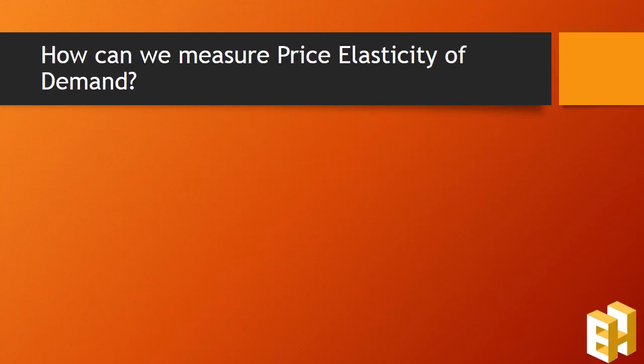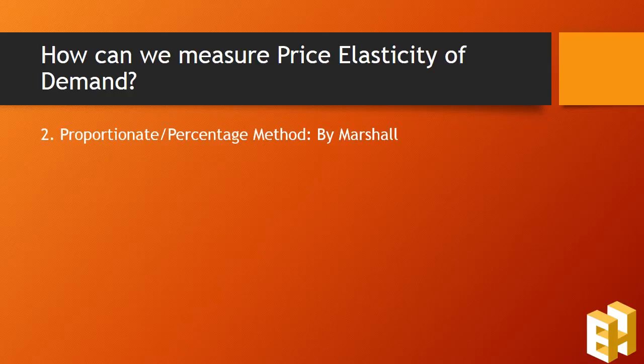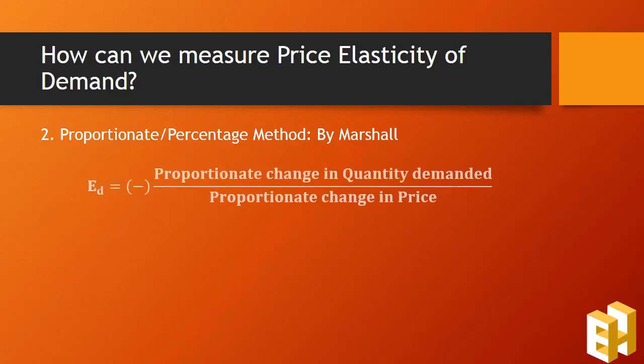The second method is the proportionate or percentage method, which was also suggested by Marshall. It is calculated using the formula: proportionate change in quantity demanded divided by the proportionate change in price.